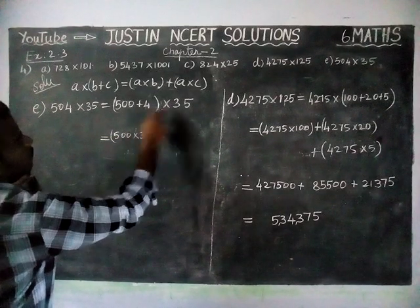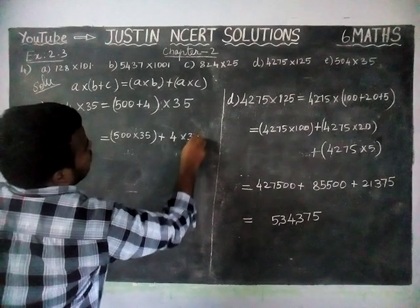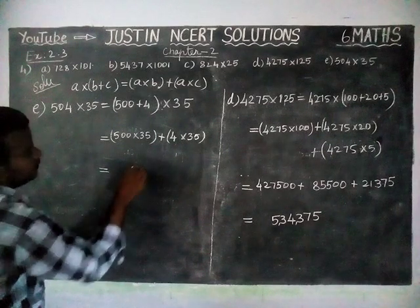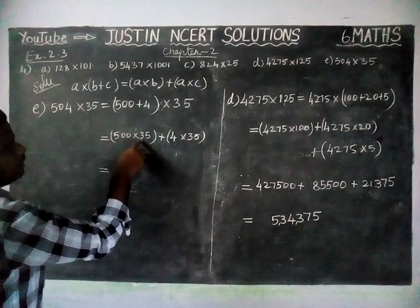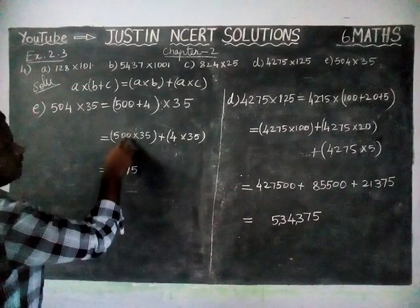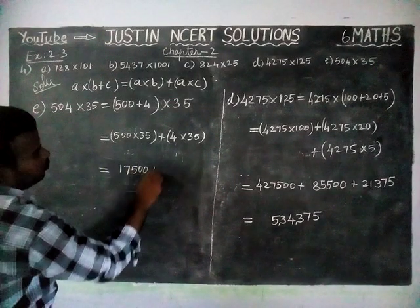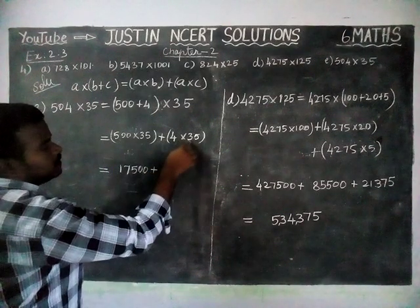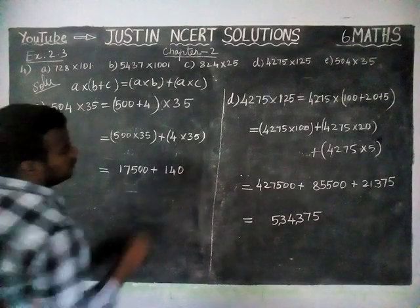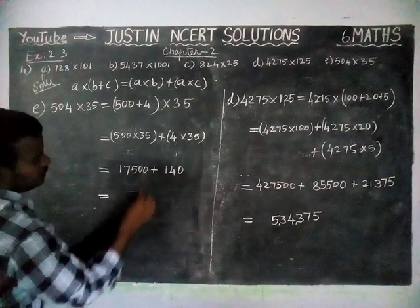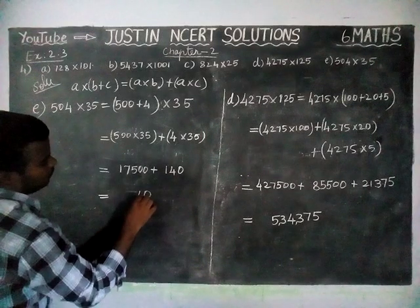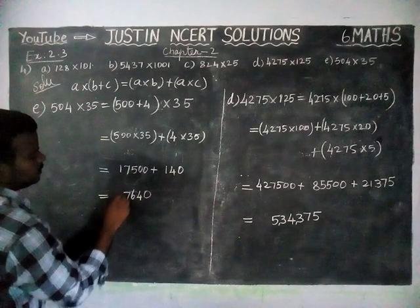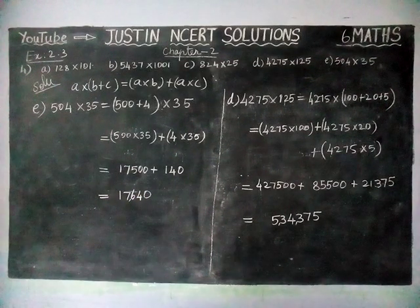Plus 4 into 35. For 4 into 35: 5 5s are 25 remaining 2, 5 3s are 15, 15 plus 2 is equal to 17, and here 1 2 0 is there. Now plus: 4 5s are 20 remaining 2, 4 3s are 12, 12 plus 2 is equal to 14. Ones place 0, tens place 4, hundreds place 1, and 5 plus 1 is equal to 6, and here 7. So the answer is 17640.